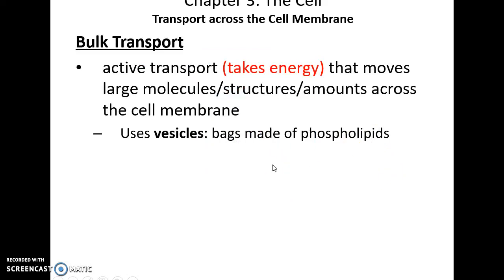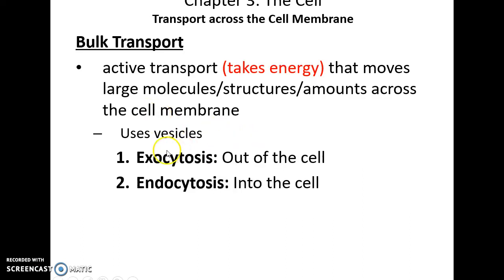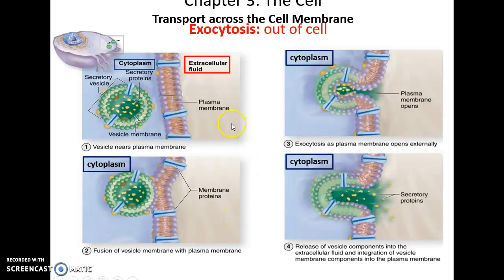There is also bulk transport, where the cell uses a lot of energy to change structures and form vesicles to either move things in or out. Using a vesicle to move things out of the cell is called exocytosis; using vesicles to move things into the cell is endocytosis. In exocytosis, a vesicle is formed inside the cell, migrates to the cell membrane, fuses with the cell membrane, and then releases its contents into the extracellular fluids.